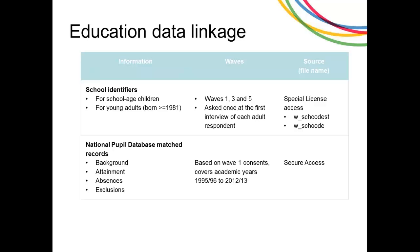The second big area is matching to the National Pupil Database. This is an administrative dataset of all pupils in state schools in England covering information about student background, attainment, absences and exclusions. The linked data covers a number of years, from as early as 1995-96 to most recently 2012-13. I'm going to talk in more detail about both of these areas now.